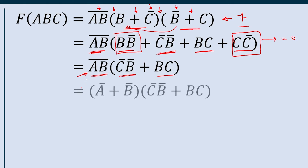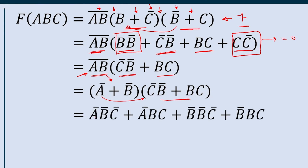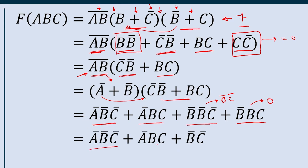Applying De Morgan's theorem to A·B-bar gives A-bar plus B in place of A·B-bar. Now multiplying out (A-bar plus B)·(C-bar·B-bar plus BC): we get A-bar·B-bar·C-bar, A-bar·BC, B-bar·B-bar·C-bar, and B-bar·BC. Since B-bar·B equals 0, the fourth term is 0. And B-bar·B-bar equals B-bar, so B-bar·B-bar·C-bar becomes B-bar·C-bar.